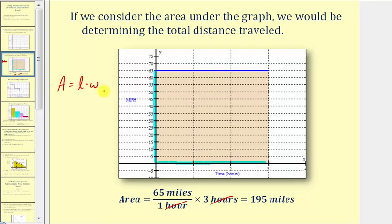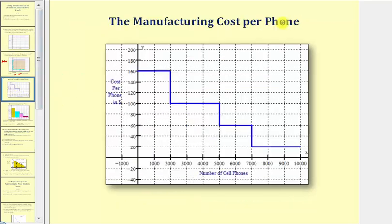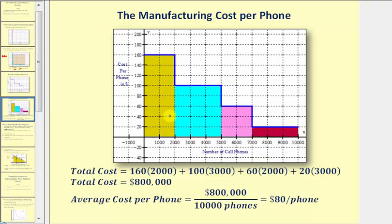Let's look at another example. Here we see the graph of the manufacturing cost per phone up to 10,000 phones. Let's determine the area under this graph, then interpret the meaning. The area under the graph would be the area under the graph and above the x-axis, which would be this area here.